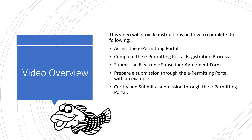This video will provide instructions on how to complete the following: access the e-Permitting Portal, complete the e-Permitting Portal registration process, submit the Electronic Subscriber Agreement Form, prepare a submission through the e-Permitting Portal with an example, and certify and submit a submission through the e-Permitting Portal.